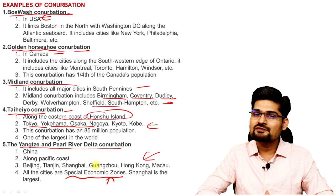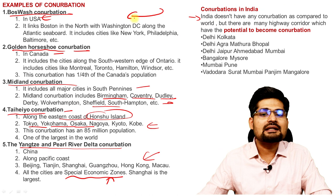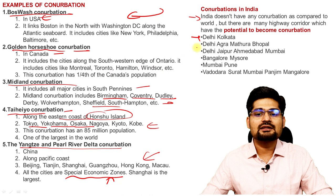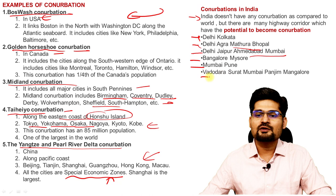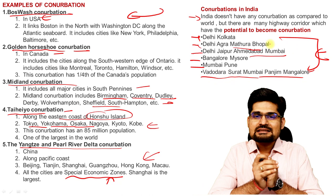In India, conurbations do not exist in the same way as elsewhere, but there are potential conurbation areas: Delhi–Agra–Mathura, Delhi–Jaipur–Ahmedabad–Mumbai, Bangalore–Mysore, Mumbai–Pune–Vadodara–Surat, and Mumbai–Panjim–Bangalore. These are combination belts and economic corridors.